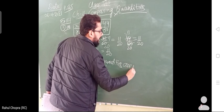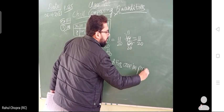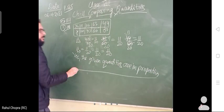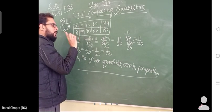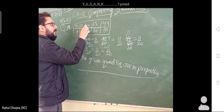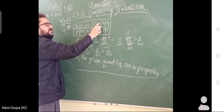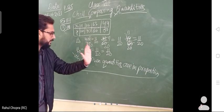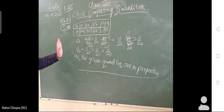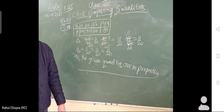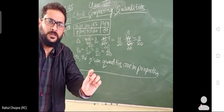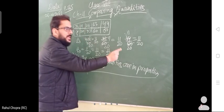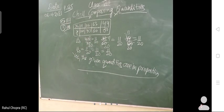It means the ratios are equal. 11 upon 20, 22 upon 40, 33 upon 60, 44 upon 80 - cancel them out and change to simplest form. Then we will say the given quantities are in proportion. If the values are not coming the same, then we will write no, the given quantities are not in proportion. Is it clear? Very good.